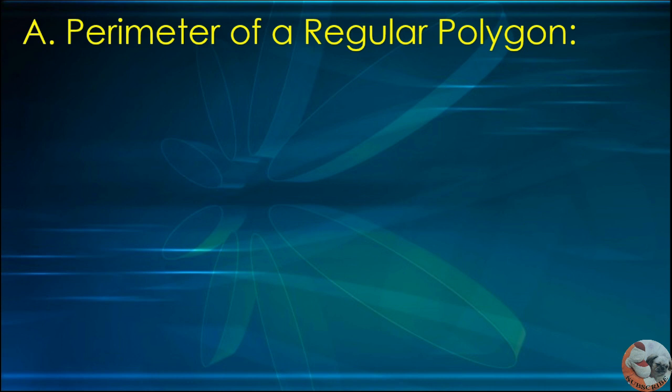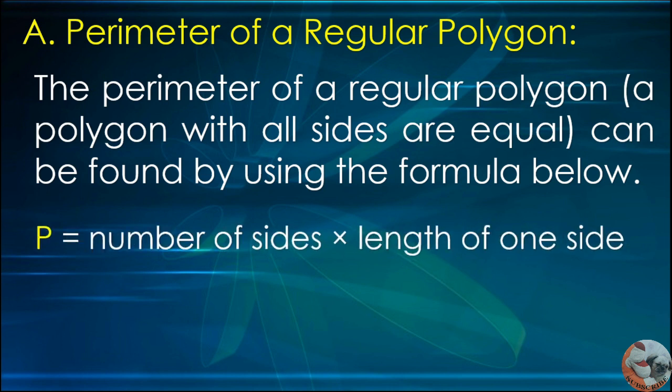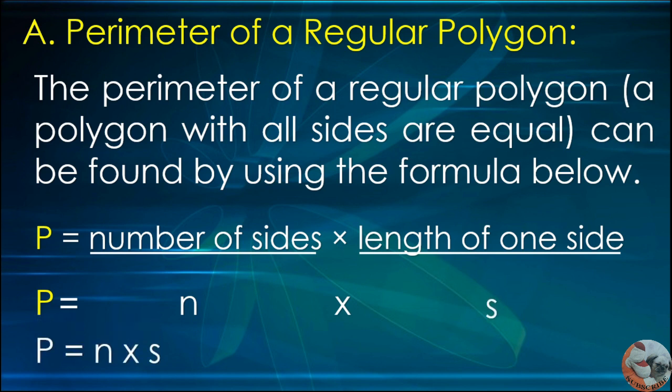Perimeter of a regular polygon. The perimeter of a regular polygon is a polygon with all sides that are equal. It can be found by using the formula below. Perimeter P is equal to number of sides times the length of one side. P equals N times S.